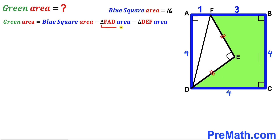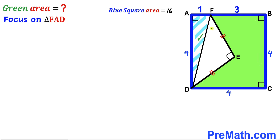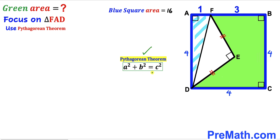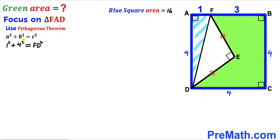Now our task is to calculate the area of right triangle FAD and right triangle DEF. Let's focus on right triangle FAD and apply the Pythagorean theorem to find hypotenuse FD. Using A squared plus B squared equals C squared, with legs 1 and 4, we get 1 squared plus 4 squared equals FD squared, which gives us 1 plus 16 equals FD squared, so FD squared equals 17.